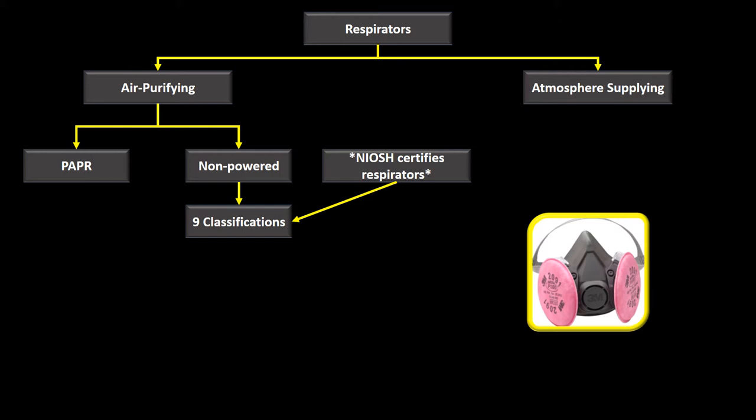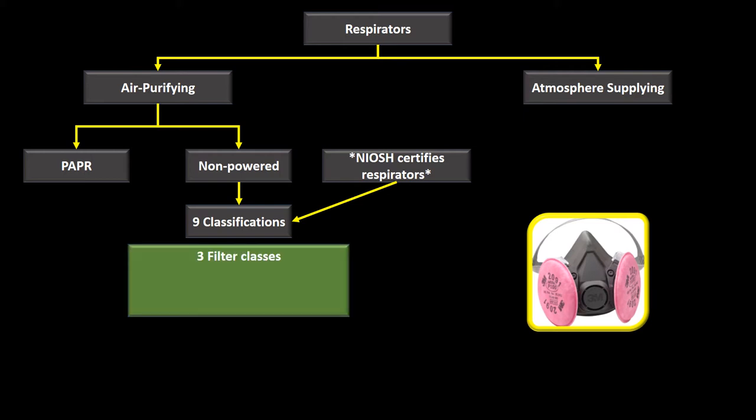The nine classifications come from three filter classes and three levels of efficiency for each filter class. The three filter classes are N, R, and P, each related to what kind of atmosphere you can use that filter class in.